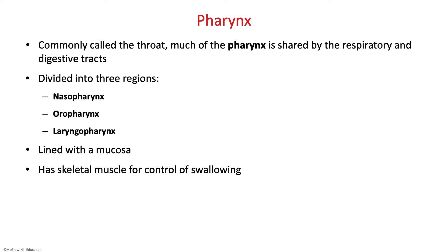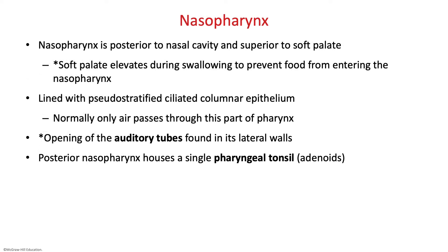Your pharynx is divided into three regions: the nasopharynx is behind the nasal cavity, the oropharynx behind the oral cavity, and the laryngopharynx behind the larynx. The nasopharynx is right posterior to your nasal cavity and superior to your soft palate. It contains openings of your auditory tubes, which help equalize pressure differences between your nasal cavity and your ear when going up in an airplane or mountains. The posterior nasopharynx houses a single pharyngeal tonsil, also called the adenoids.